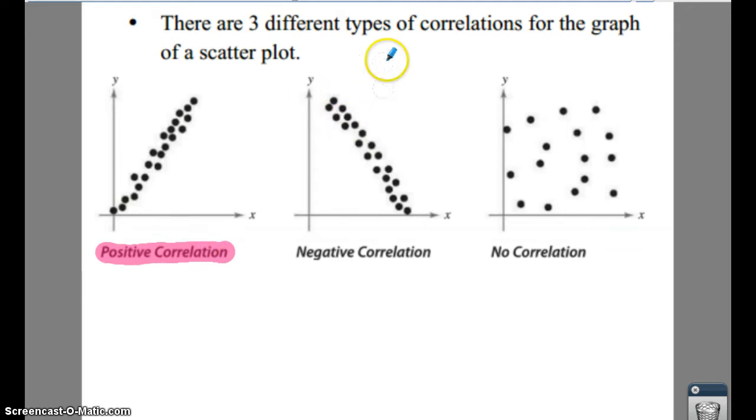If your data goes down from left to right, that means you're going to have a negative correlation.